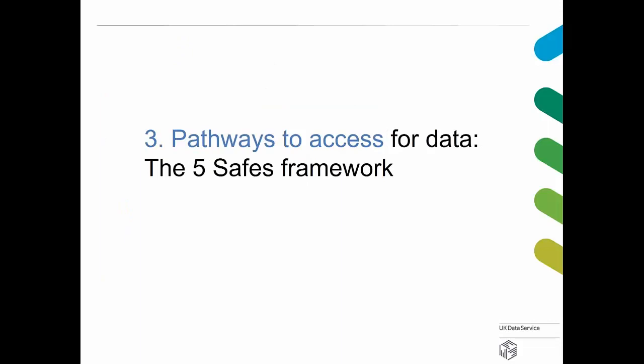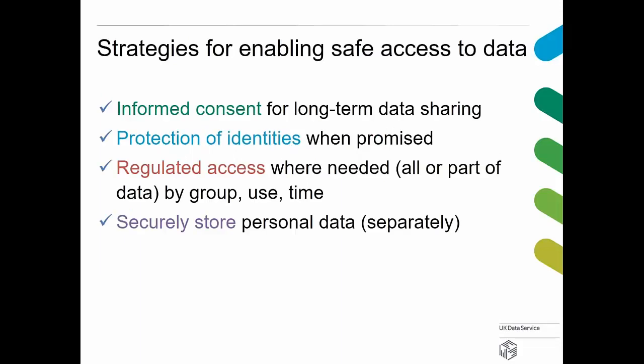We use four pillars for enabling safe access to data. First, informed consent for long-term data sharing when dealing with individuals or organisations. Second, protection of identities where promised. Third, regulated access where needed — this doesn't have to cover a whole dataset; it can restrict by group (e.g., only academics), use (e.g., non-commercial only), or time (e.g., an embargo). Fourth, securely storing personal data separately from the bulk of research data.